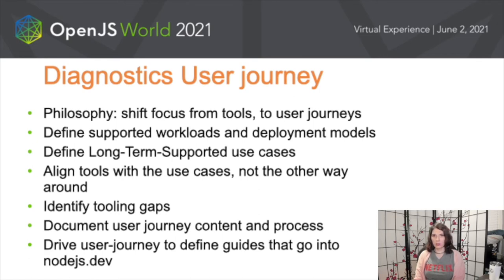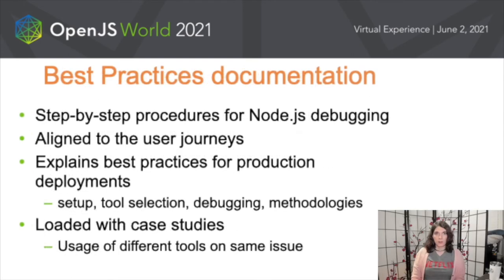We also started to use those user journeys to write guides that will live on the new Node.js website. These guides, also called best practice documentation, are step-by-step procedures on how to debug and troubleshoot Node services. Written based on user journeys, the guides and user journeys are aligned. The guides will also provide instructions and pre-requirements to use diagnostic tools in production environments, since some tools require the Node process to be preemptively configured. And because of the range of tools available, the guides are loaded with case studies on different tools applied to similar issues, with observations on why one tool is preferred over another.